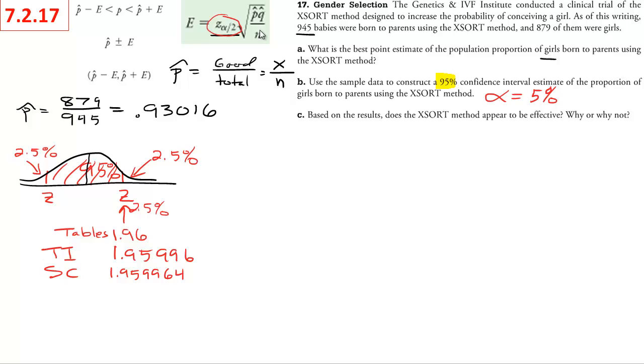Now we need to do p hat, q hat, and n. Well, p hat we already have: 0.93016. And then what is q hat? You have to remember that p hat plus q hat always equals 1. They are complements of each other, or more precisely, or what would help us more, is that q hat is 1 minus p hat. It makes the algebra easier, so we can actually just do 1 minus 0.93016 and we can get that q hat.